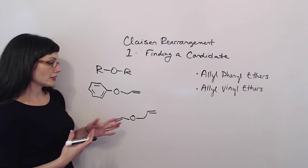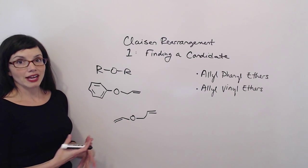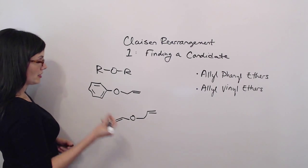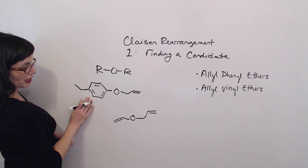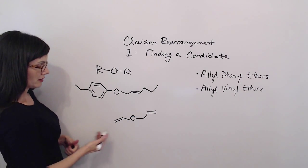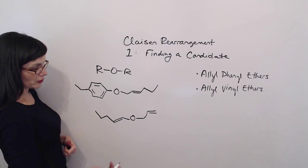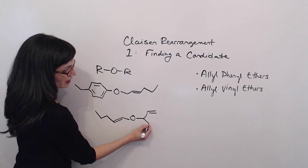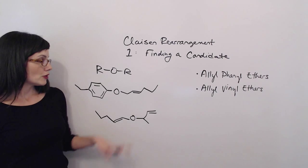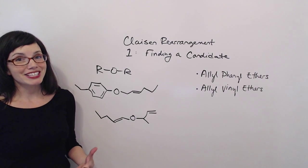Now, not all of your allyl phenyl ethers and allyl vinyl ethers are going to look exactly like these molecules. They can have other groups attached. For example, your phenyl group can have other bonds. Your allyl group can have other bonds. So can your vinyl group. And you can even have other bonds on the sp3 carbon of your allyl group. So these molecules can look very different.